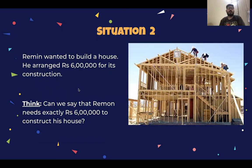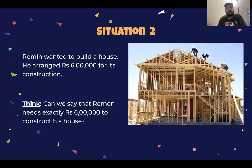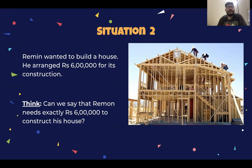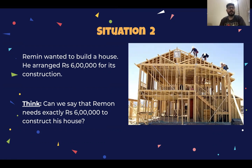Consider Raymond — he wants to build a house and he arranged around 50 lakh for its construction, or say 6 lakhs for construction. Now do you think Raymond needs exactly 6 lakhs to construct his house? It could be more or it could be less, right? So now let's see the situation.